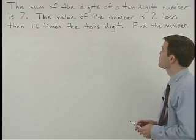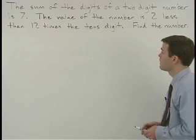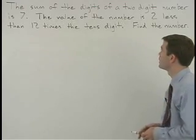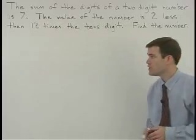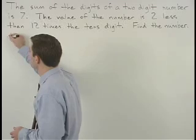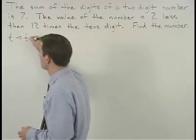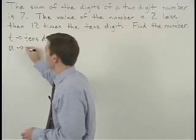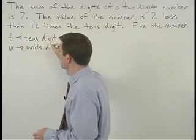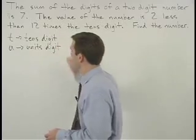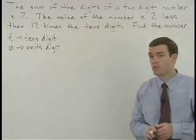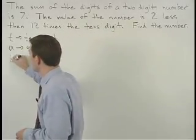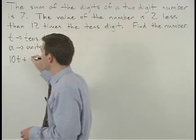The sum of the digits of a two-digit number is seven. The value of the number is two less than twelve times the tens digit. Find the number. Let's use the variable t to represent our tens digit and u to represent our units digit. Remember from the previous example that the value of our number can then be represented as 10t plus u.